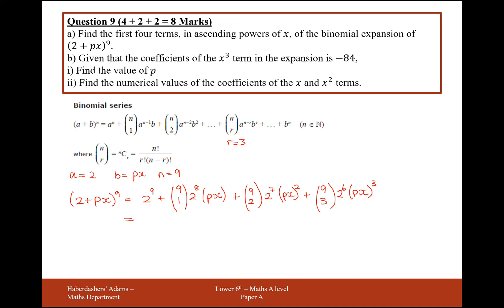So, 2 to the power of 9, that is, hold on, let me just grab my calculator. 2 to the power of 9, that's 512. And then plus, now you need the 9 choose 1 button for this one here, and times that by 2 to the 8, and you get 2,304 px.